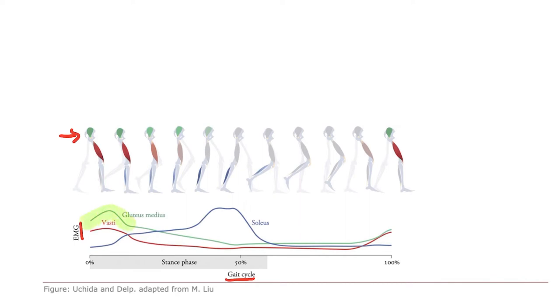Now it turns on at the end of swing in anticipation for stance. Remember there's a delay between when your muscle is excited and when it generates force. So the gluteus medius will come on before my foot contacts the ground so that it's ready to take body weight support.